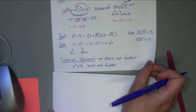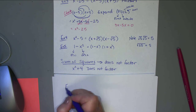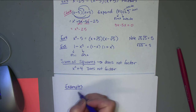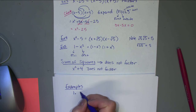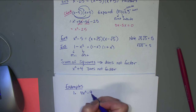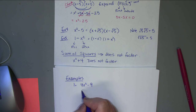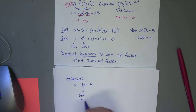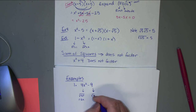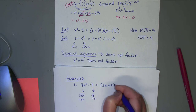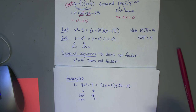Let's look at a couple more examples. If we had 4x² - 9 — any time you have two terms with a minus sign in between — the square root of 4x² gives 2x, and the square root of 9 is 3. So this factors as (2x+3)(2x-3). If you FOIL that out, you would get back to the original.